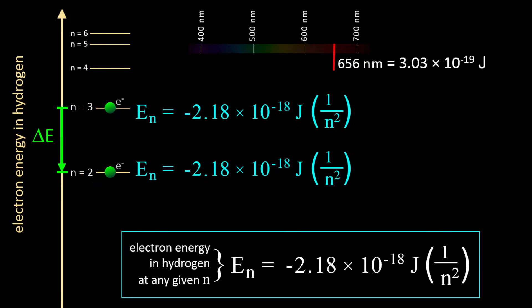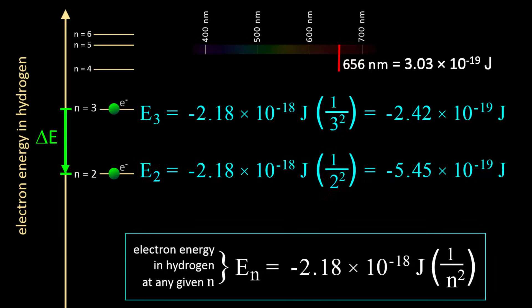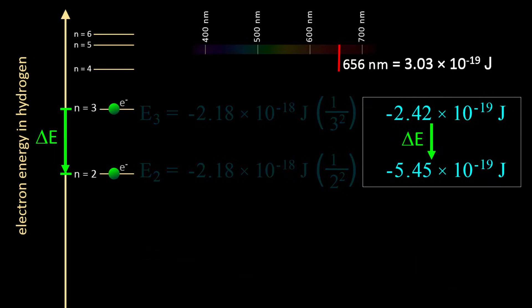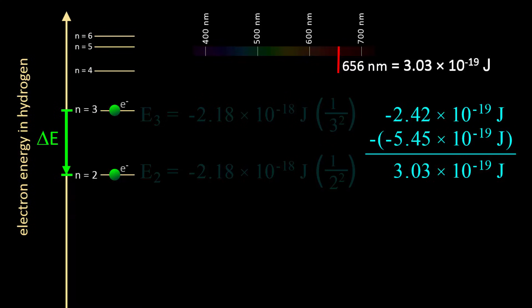We may see something interesting. For an electron at n equals 3, its energy is negative 2.42 times 10 to the negative 19 joules. For an electron at n equals 2, its energy is negative 5.45 times 10 to the negative 19 joules. The difference between these two energies is the energy lost by the electron as it transitions from n equals 3 to n equals 2, which would be the energy of the emitted light.